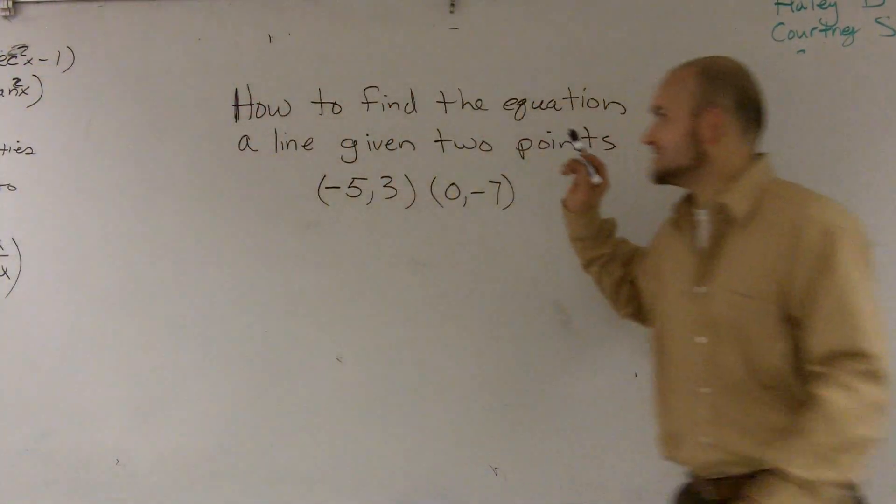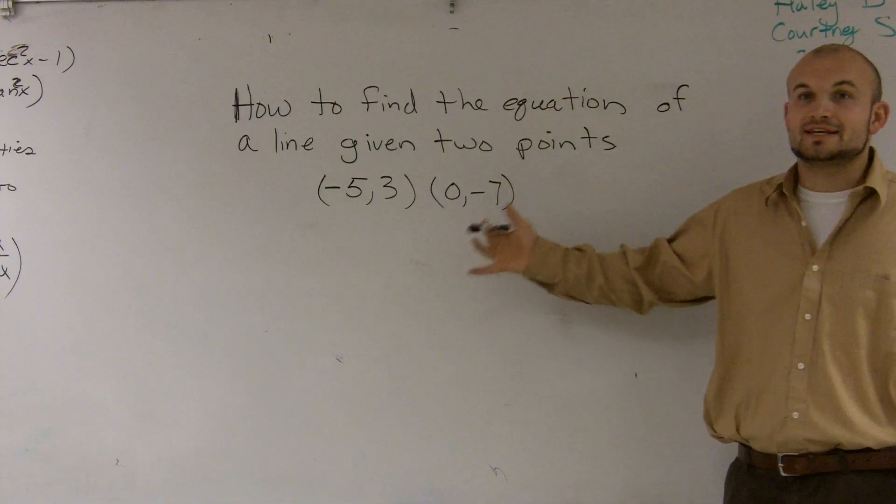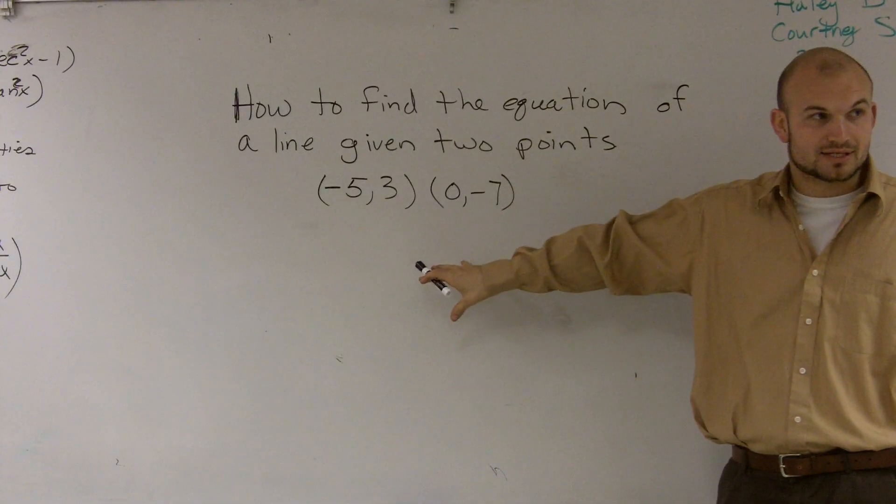What I'd like to do is show you guys how to find an equation of a line given two points. So pretty much what I'm asking is, I want to find the equation of a line that goes through these two points.